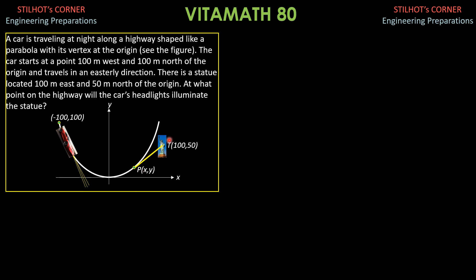The idea here is, if this is the tangent that hits the statue directly, the slope of this tangent in calculus is dy/dx, and it should be equated to the slope of this line, which is delta y over delta x, where delta y is 50 minus y, and delta x is 100 minus x.